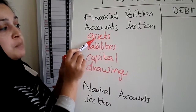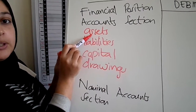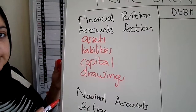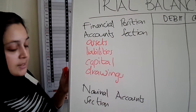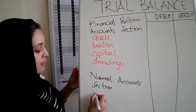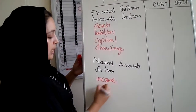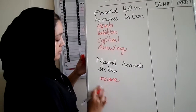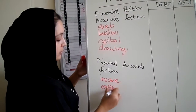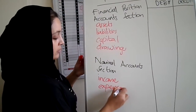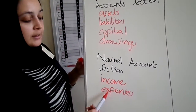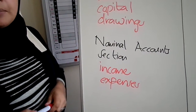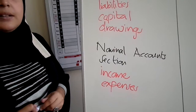Remember, you can't just put a category called 'assets' — you need to list every single asset. Under the nominal account section you're going to have all of your incomes and all of your expenses. Again, you can't write it just like that; you need to list each and every single income and each and every single expense.